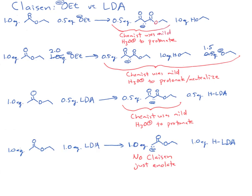But if we use one equivalent of LDA, that one equivalent is going to immediately deprotonate the one equivalent of ester to create one equivalent of our enolate. We also have one equivalent of protonated LDA, but the deprotonated ester enolate has nothing to react with because there's no ester left — so it's just going to stay in the flask. We're not going to get a Claisen. We could add another electrophile to get a new reaction, but we're certainly not going to get a Claisen.